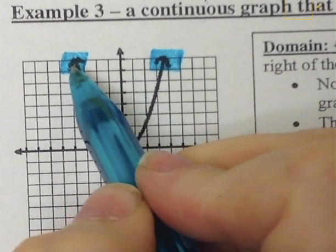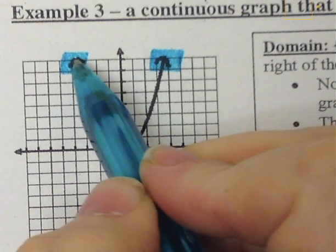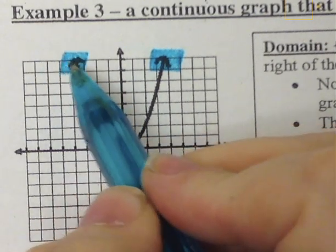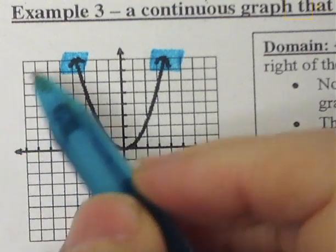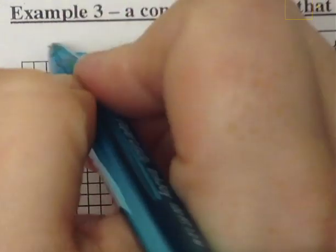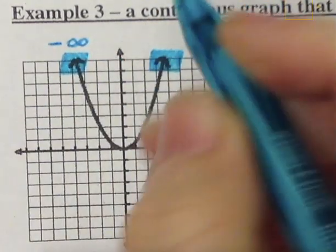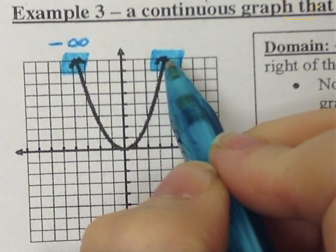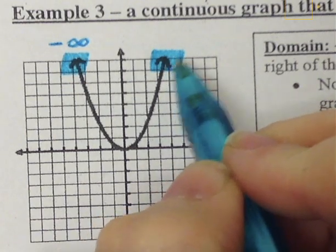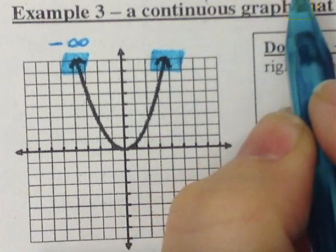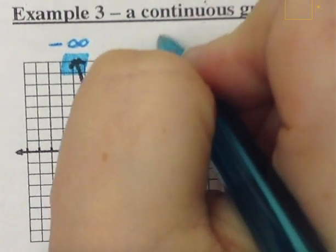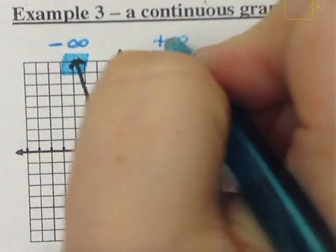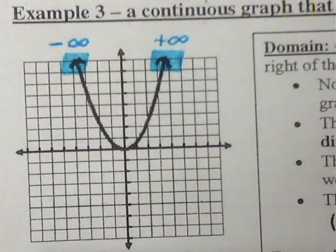The arrow represents an infinity. It will keep going to the left-hand side forever, and that goes into the negative values of the x's. So my domain will have a negative infinity for this arrow. On the right-hand side, this arrow represents an infinity, and since it's on the positive values of the x's, it will go to a positive infinity. This is for our domain.